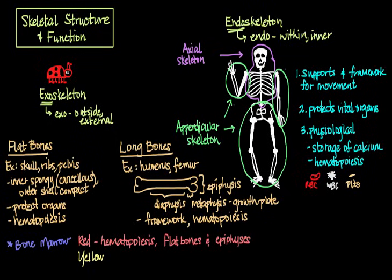Yellow bone marrow, on the other hand, is primarily a site for fat storage, made up of fat cells called adipocytes. Generally, you can find yellow bone marrow within the diaphyses of long bones.